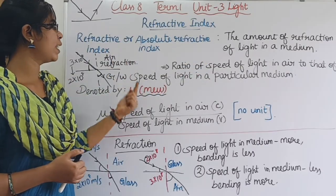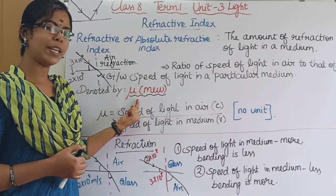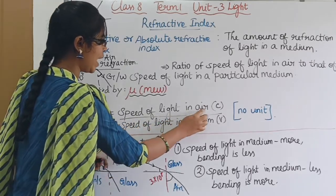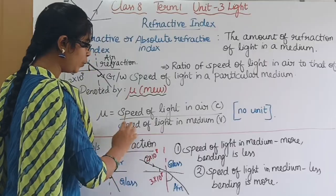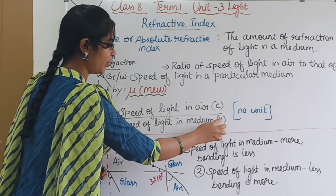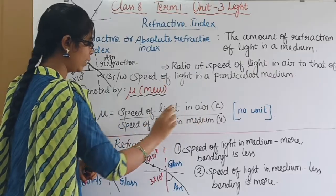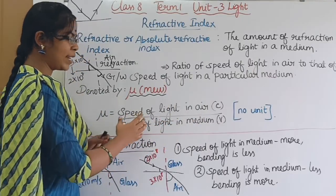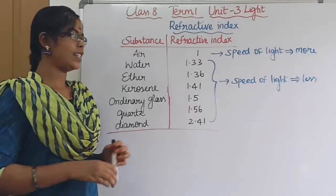The refractive index is denoted as mu. Mu is equal to the speed of light in air — denoted as c — divided by the speed of light in the medium — denoted as v. In this formula, since speed cancels with speed, there is no unit for refractive index.